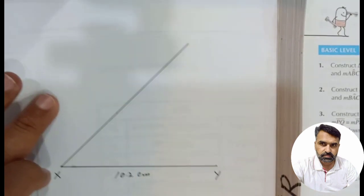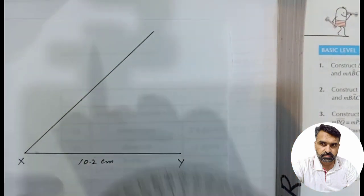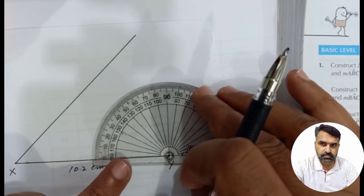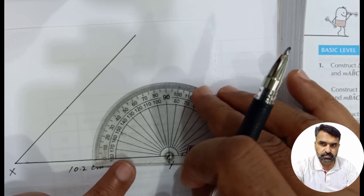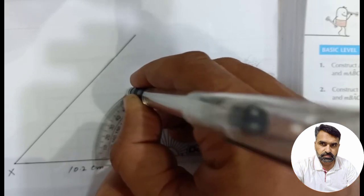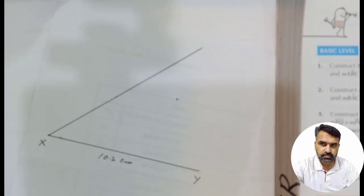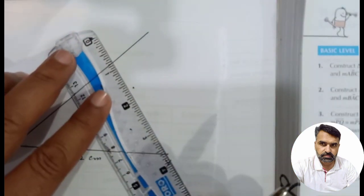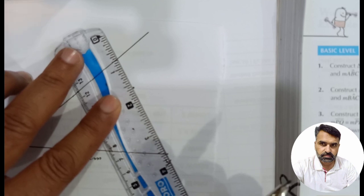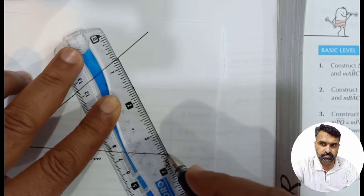Students, now at point Y we set the protractor on the 0 line and go to 60 degrees, marking a dot. We then join this with the help of a scale and produce the arm. We draw the line from Y at 60 degrees.